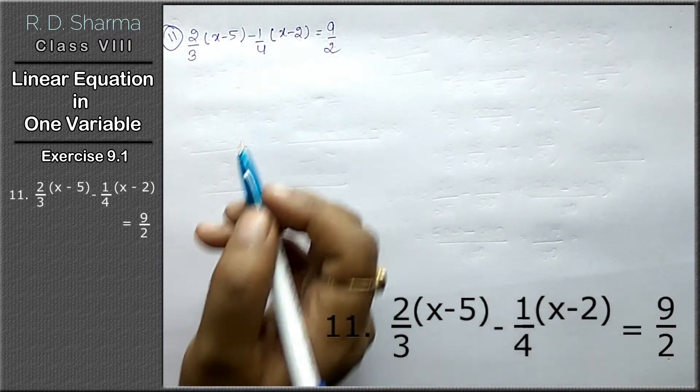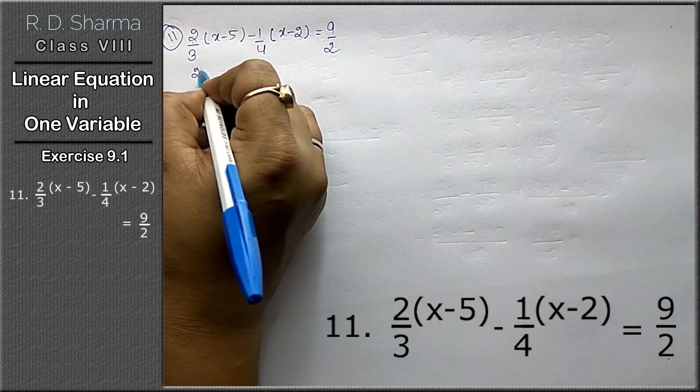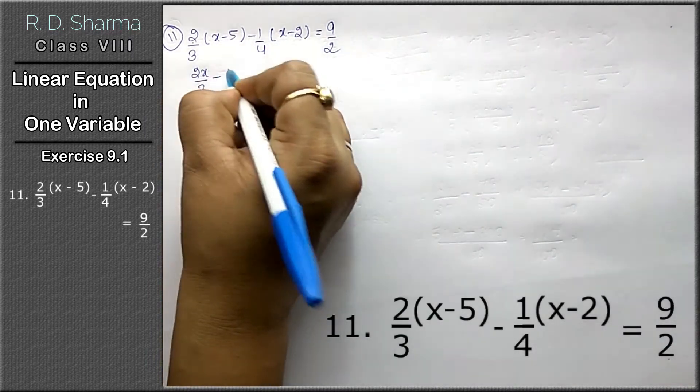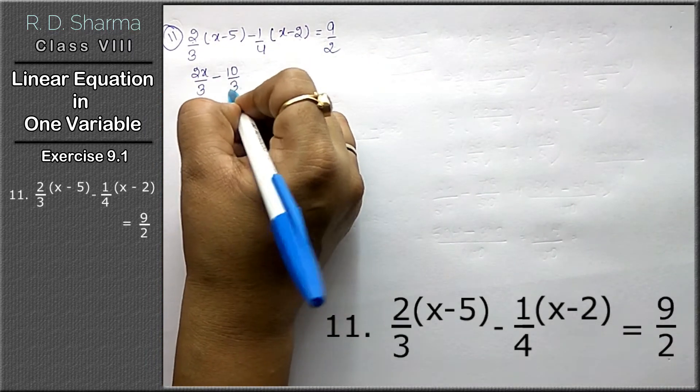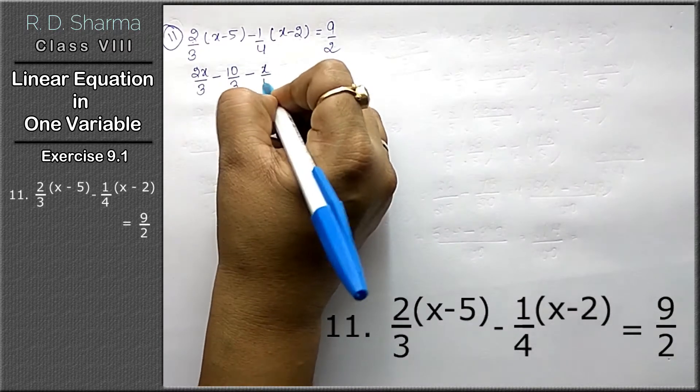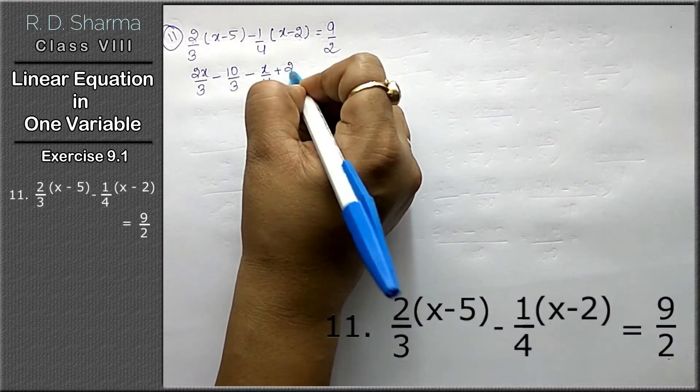Friends, we know that this multiplication will be in this. That means 2x upon 3 minus 10 upon 3 minus x upon 4 minus minus plus 2 upon 4.